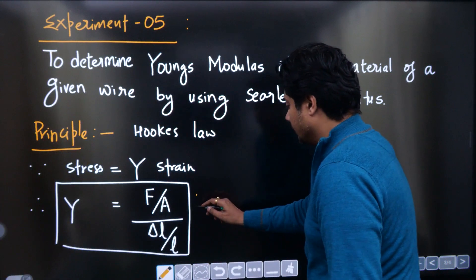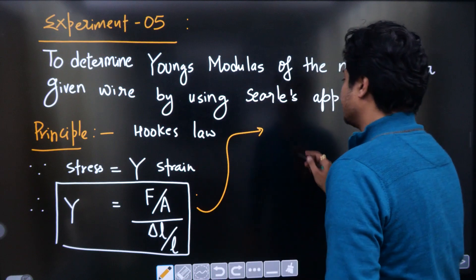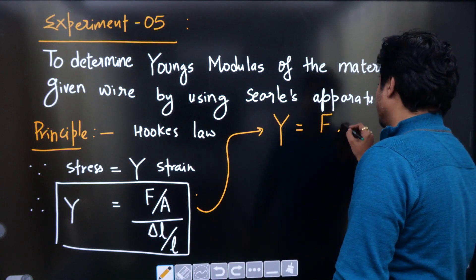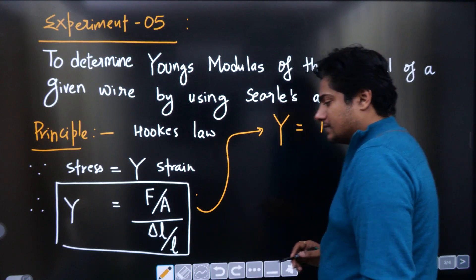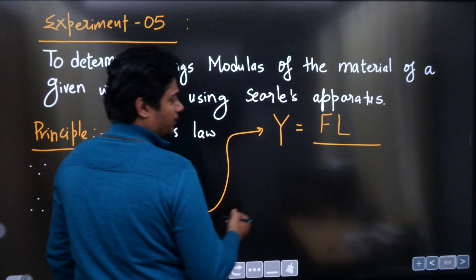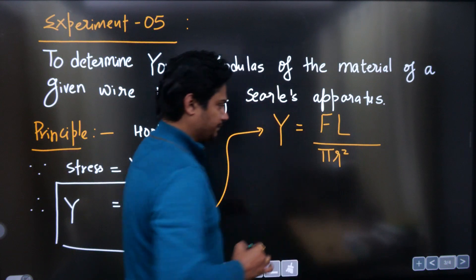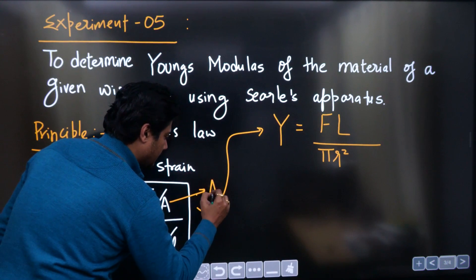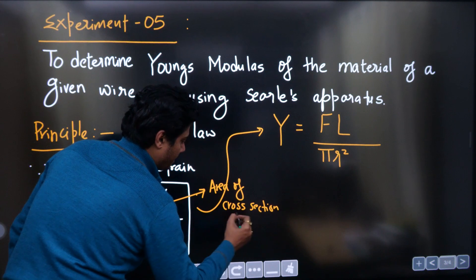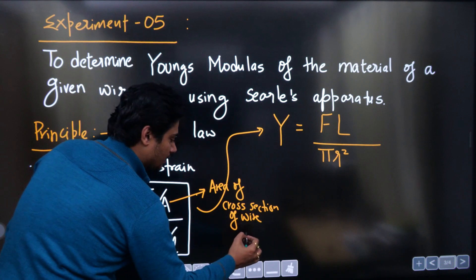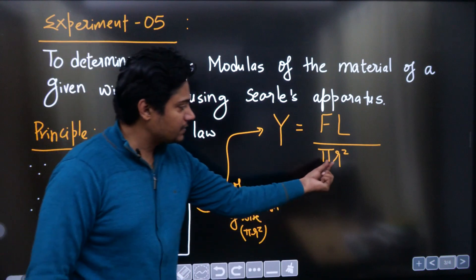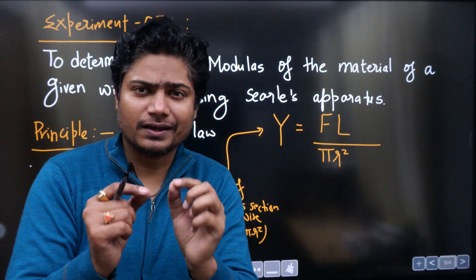Be careful with the exact result. Y equals F into L — capital L, which means the original length of the wire — upon the area of cross section, which is pi R squared. This area is the circular cross-section of the wire, where R is the radius. This radius, or the diameter of the wire, must be measured in the experiment.